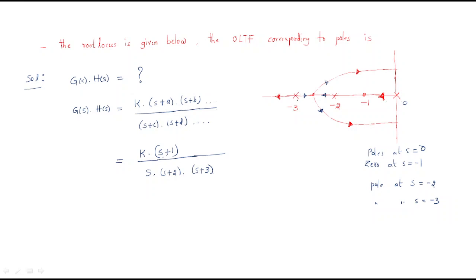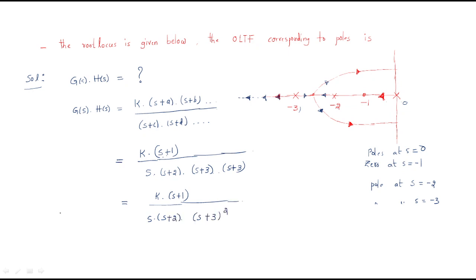Looking further, s = −3 has another path — another root locus is available in a different direction. So s = −3 has root locus in two directions, meaning (s + 3) appears squared. Therefore the open loop transfer function is: K(s + 1) / [s(s + 2)(s + 3)²].